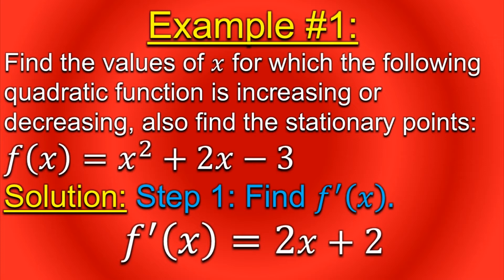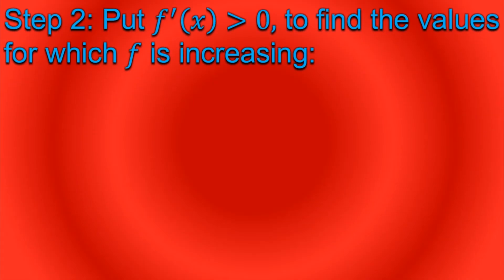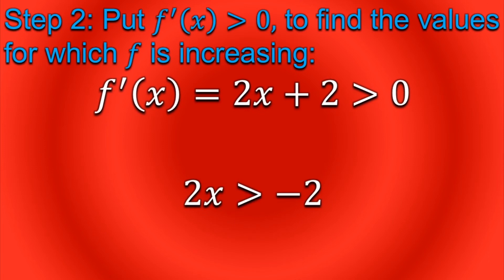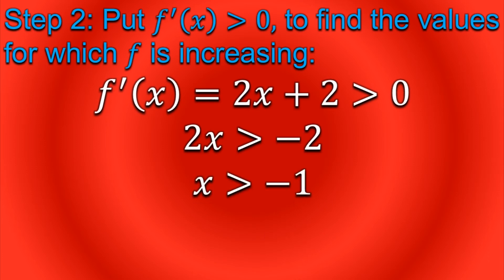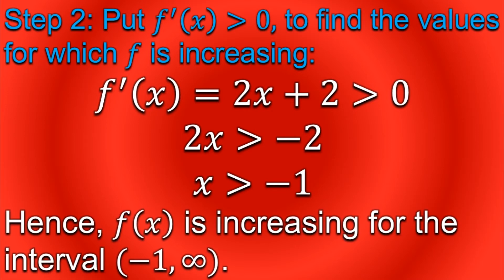The derivative of x² + 2x − 3 is 2x + 2. I am sure you know how to take the derivative of a function, but if you have any confusion let me know and I will create a dedicated video on derivatives. The next step is to put f'(x) > 0 to find the values for which f is increasing. By doing so, we obtain that for x > −1, f'(x) is positive. Hence, f(x) is increasing on the interval (−1, ∞).